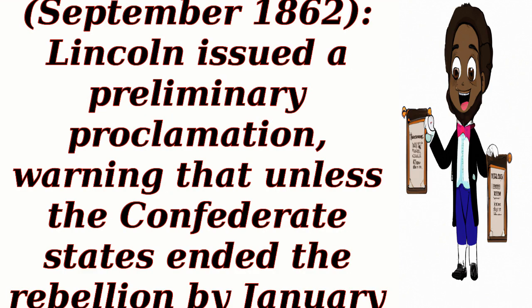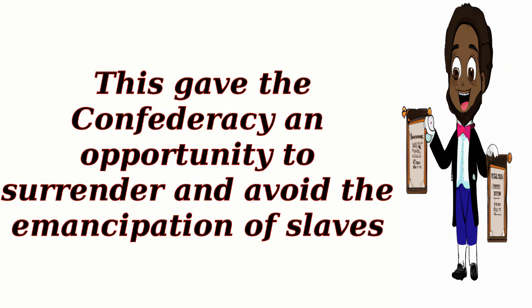Preliminary Emancipation Proclamation, September 1862. Lincoln issued a preliminary proclamation, warning that unless the Confederate states ended the rebellion by January 1, 1863, all slaves in those states would be declared free. This gave the Confederacy an opportunity to surrender and avoid the emancipation of slaves.